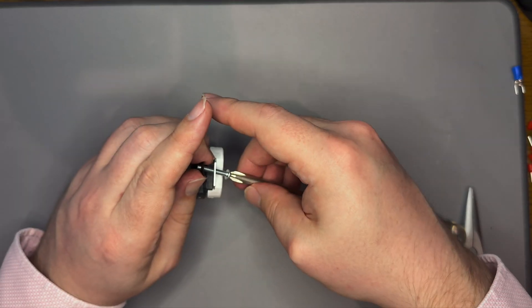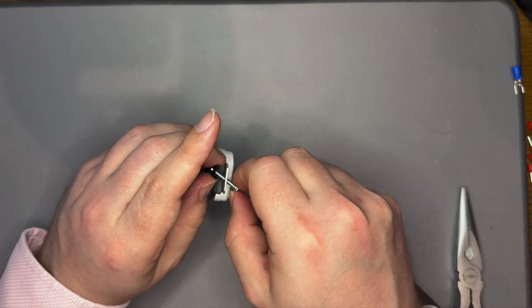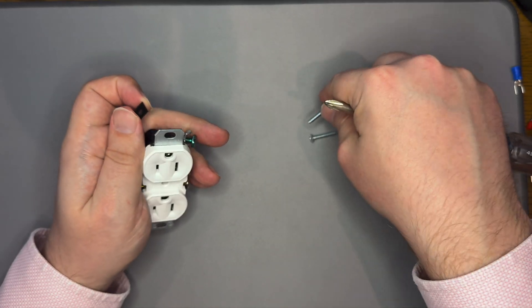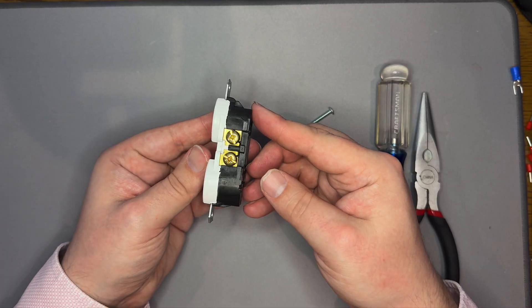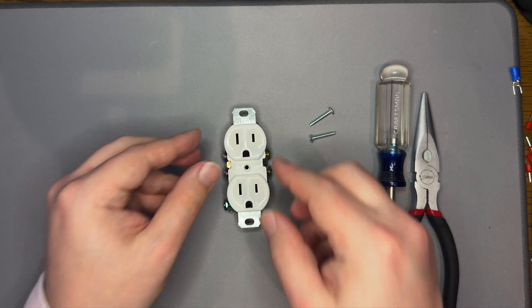Finally, remove the two screws from the top and bottom. Retain one of these as you will use it later. Now, your outlet is prepared and you are ready to assemble your case.